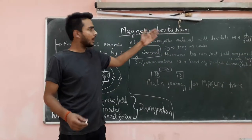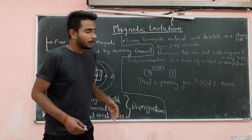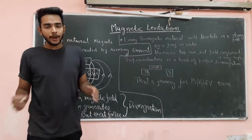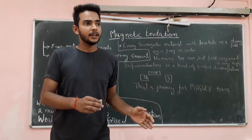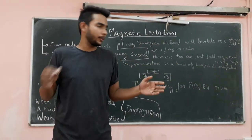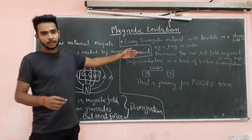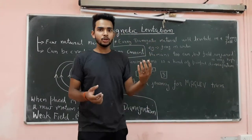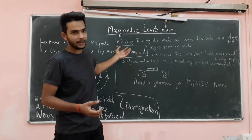Every diamagnetism material will levitate in a strong field. In fact, you can also levitate, but the field required is very enormous. Like, we can also see many frogs in water, they levitate in water just because of this diamagnetism and magnetic levitation.